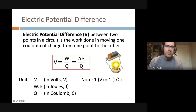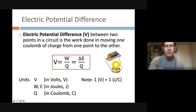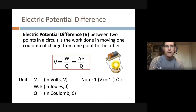In terms of units, voltage is measured in volts. Work and energy are measured in joules, and charge is measured in coulombs. The volt is a derived unit — one volt equals one joule per coulomb.